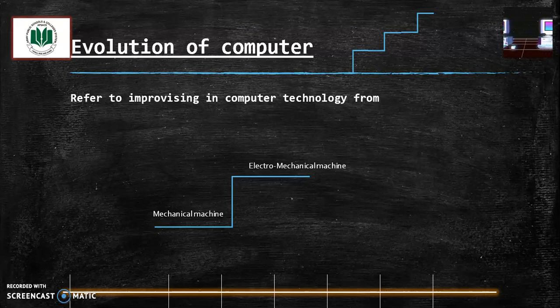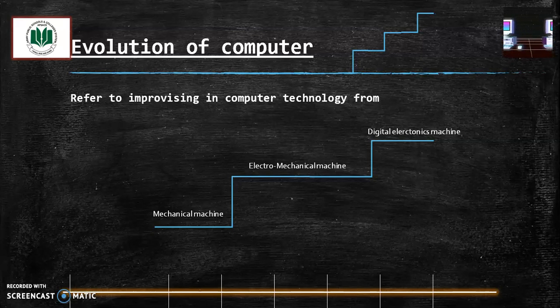As we proceed further, we see electromechanical machines where electricity is involved to operate the machines, and these are faster machines compared to mechanical machines. Last but not least are the digital electronic machines. These are the latest machines which we are using nowadays.